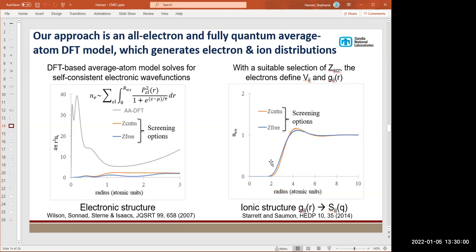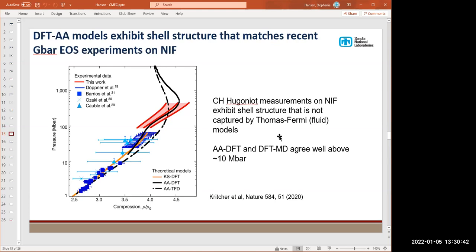Once you make that choice you can define an ion-ion potential. That's not what an electron sees around one of these ions, it's what a neighboring ion sees if it runs into a neighbor. That lets you through a procedure developed by Charlie Starr and D.D. Simone get an ion structure that is again fully self-consistent with your electronic structure. It's not going to tell you the difference between BCC and FCC lattices, but it will tell you the difference between something that's close to melt and something that looks more like a plasma.